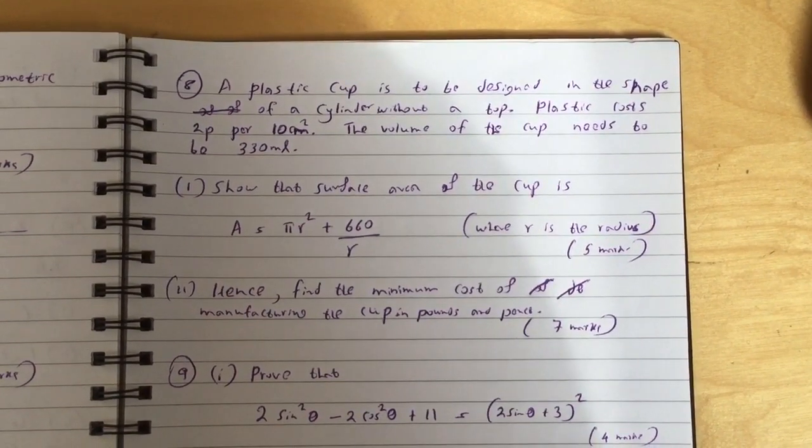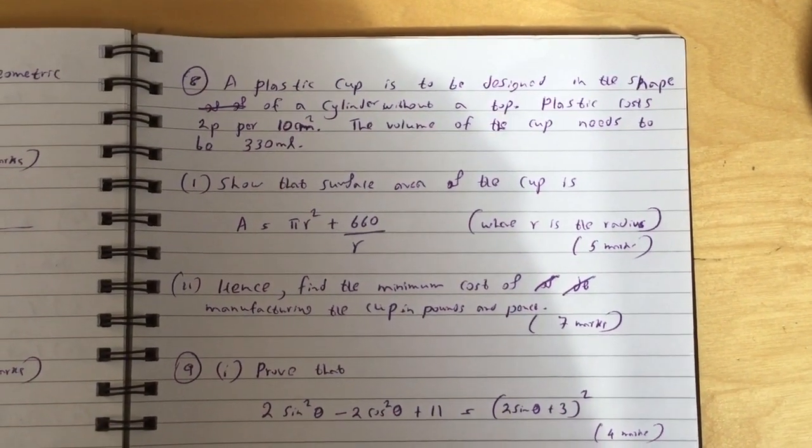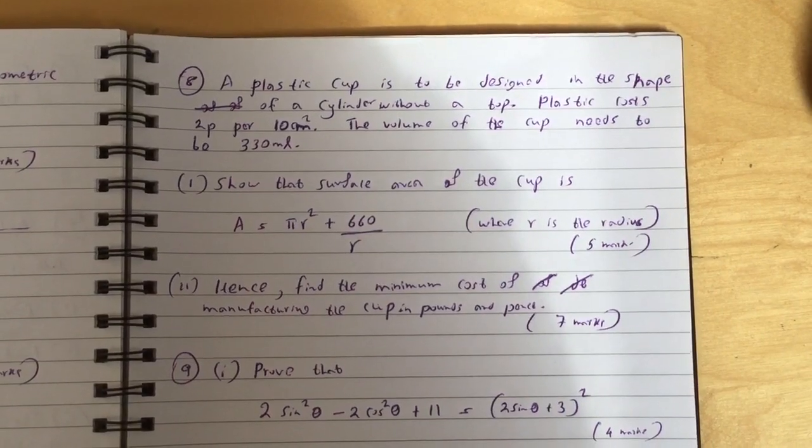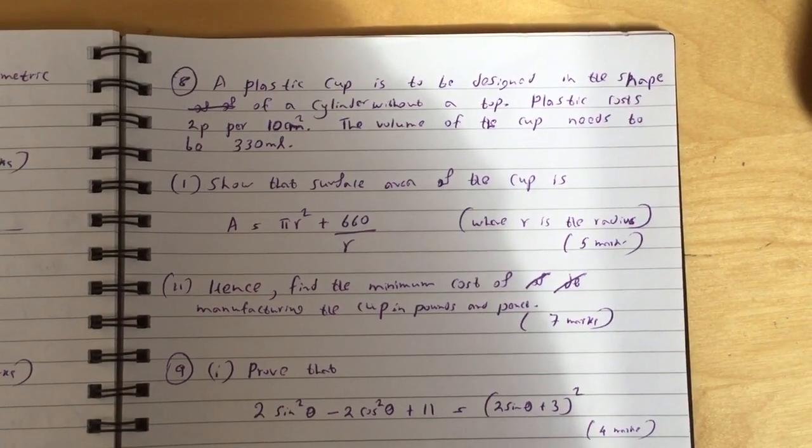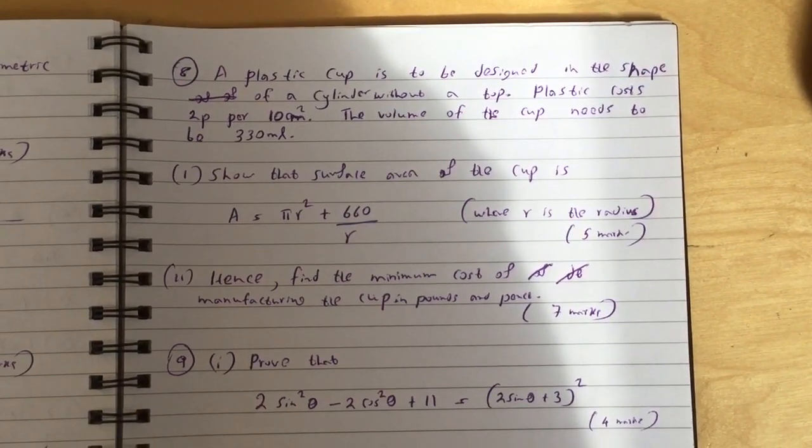Show that surface area of the cup is A equals pi r squared plus 660 over r, where r is the radius. Hence find the minimum cost of manufacturing the cup in pounds and pence.